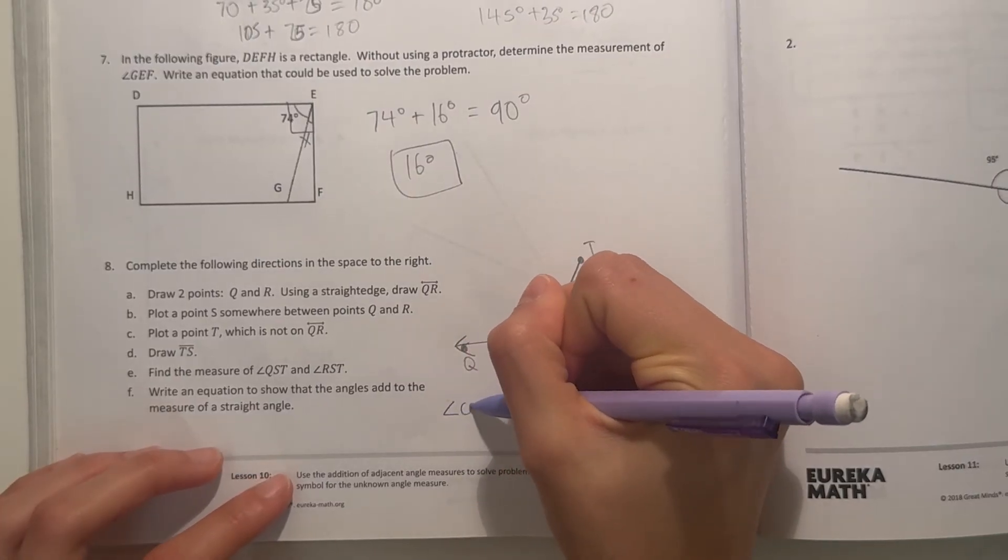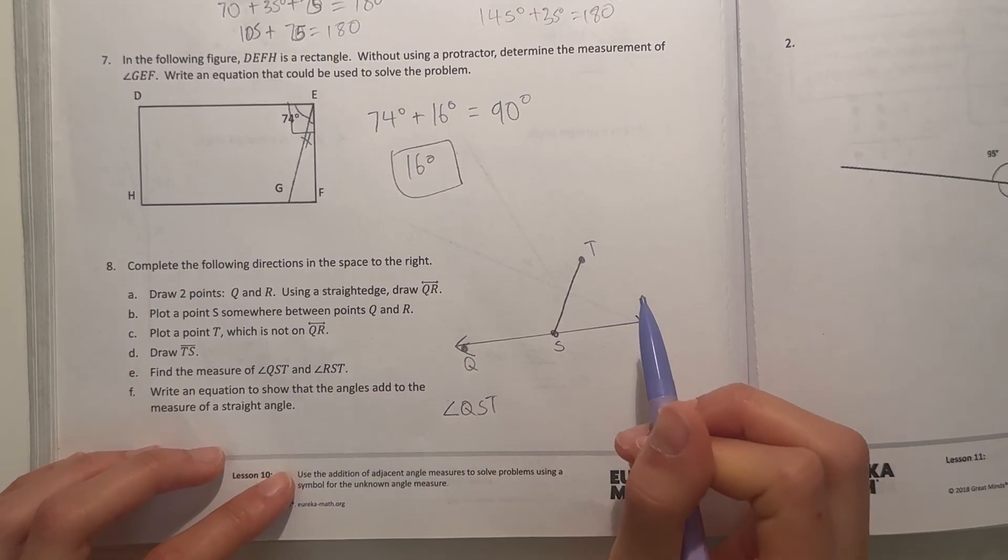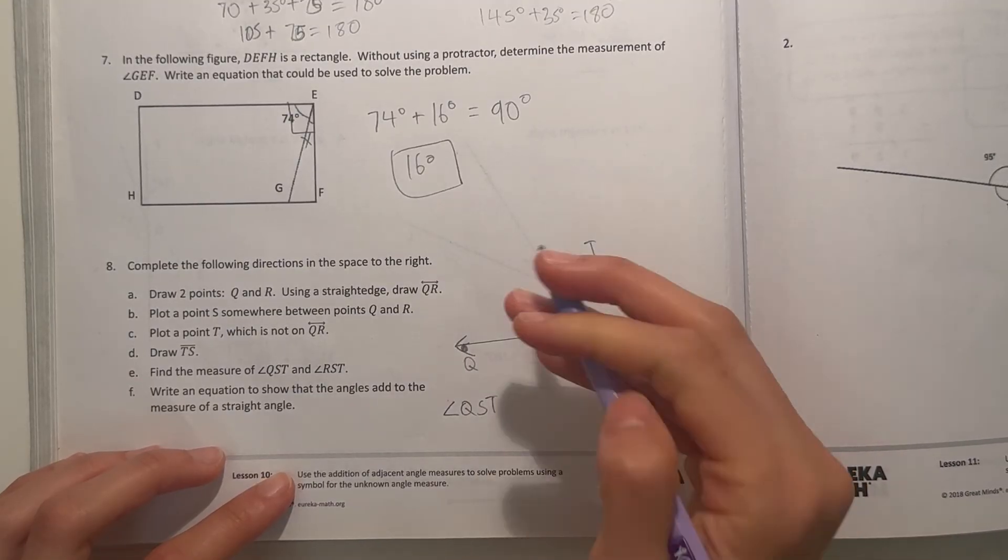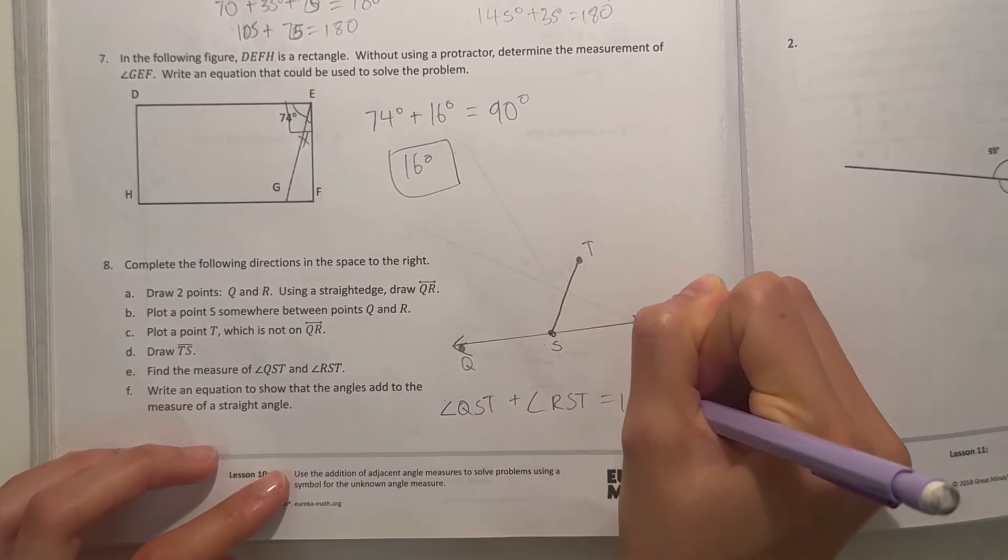So do angle QST plus angle RST is 180. So that's all you have to do.